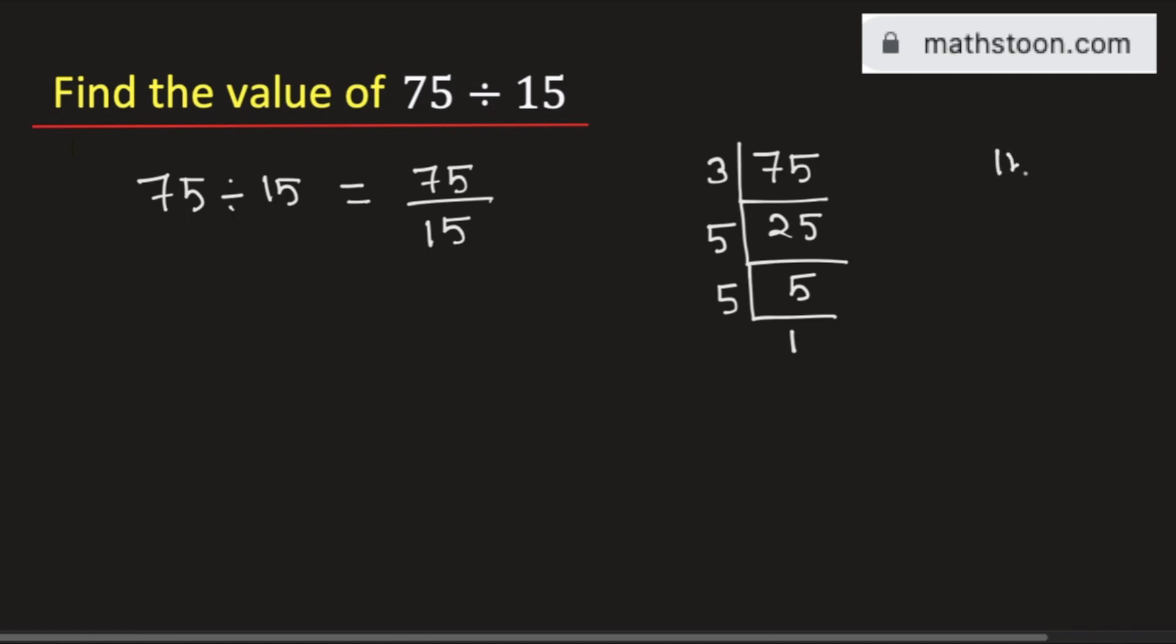For 15, we know that it is divisible by 3, and we get 5 here. It is divisible by 5, and we get 1 here.